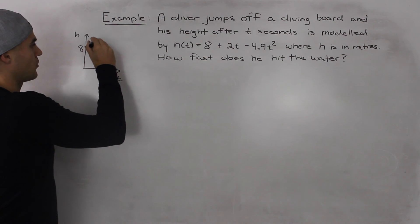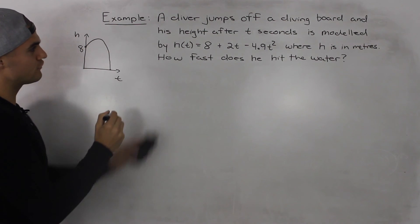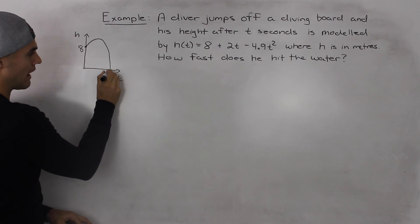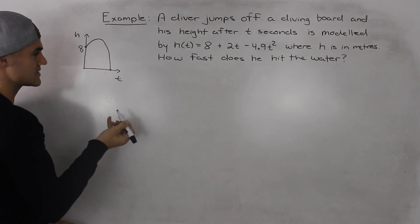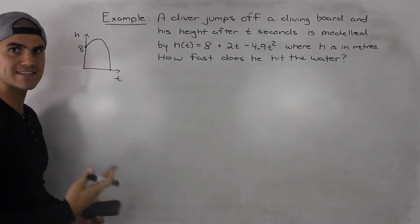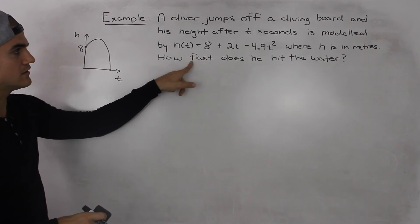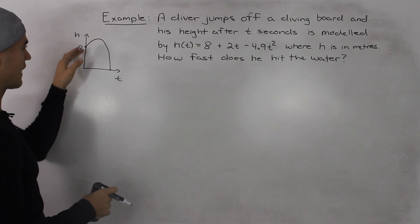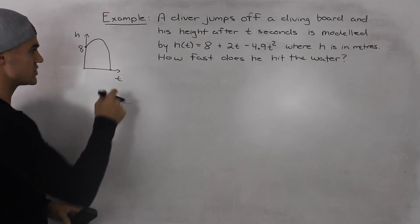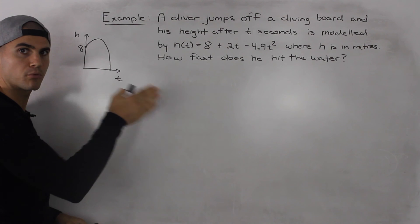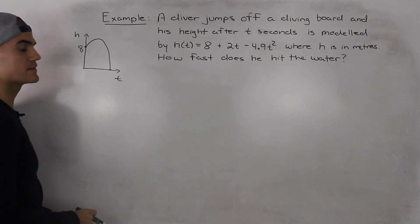He jumps off the board and they're asking for how fast does he hit the water? So this is an instantaneous rate of change question because they're asking for the speed of how much the height is changing or the speed at which he's hitting the water at one point in time.